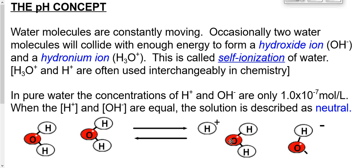Periodically, as water molecules bounce around and smack into each other, every once in a while one of them will break. In pure, 100% pure water, we find that 1×10⁻⁷ moles of water molecules have broken apart to form hydrogen and hydroxide ions — or hydronium and hydroxide ions. Because the hydrogen and hydroxide amounts are equal to each other, we describe that solution as being neutral.